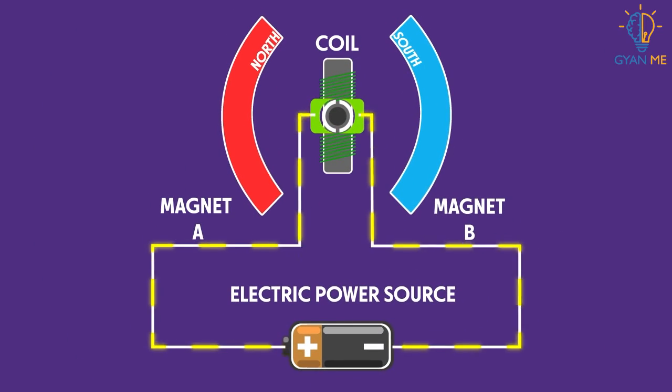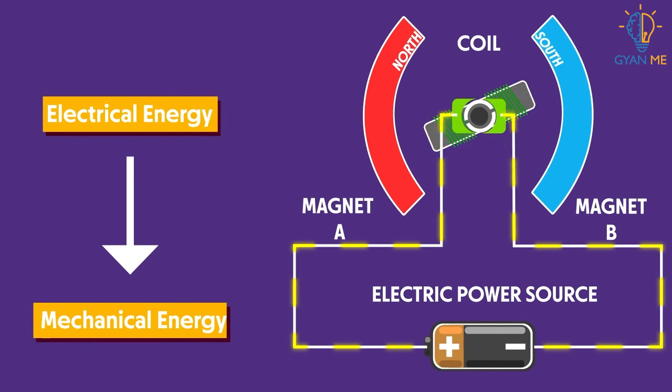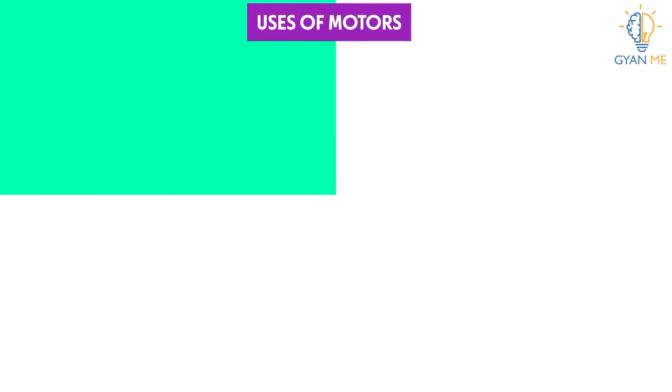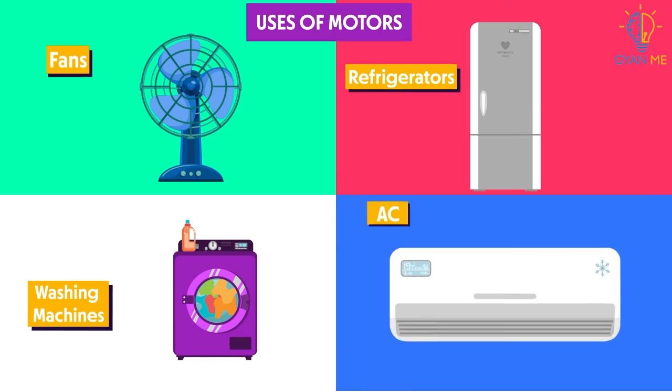So students, we have learned that an electric motor converts electrical energy to mechanical energy. And this principle is used in various electrical instruments like fans, refrigerators, washing machines, AC, etc.